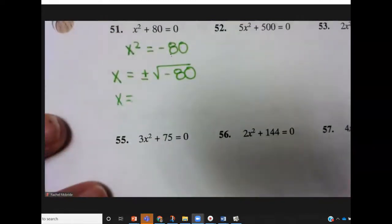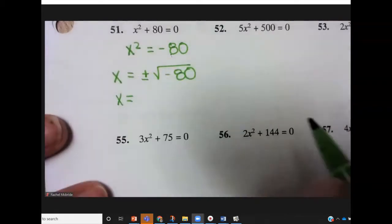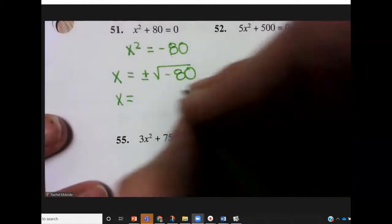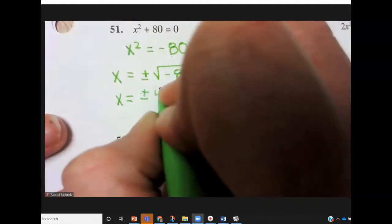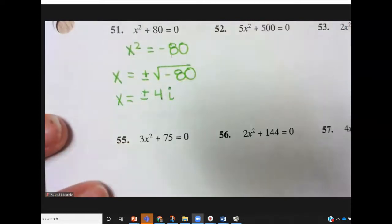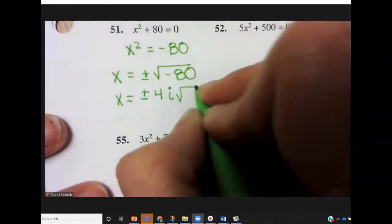So taking the square root of something squared guarantees those two answers. So then you get x equals, and once again, 80 is going to divide by the perfect square 16. So we get the square root of 16, which is 4. So it's plus or minus 4i square roots of 5.